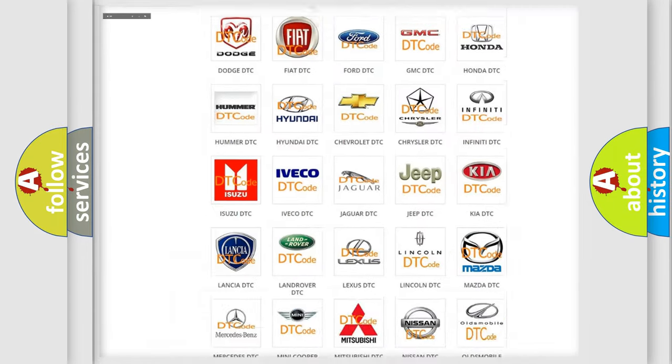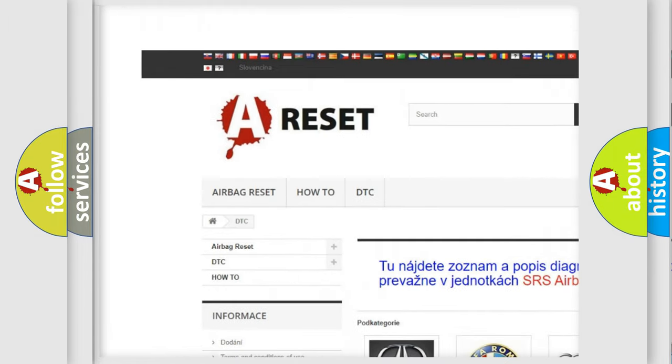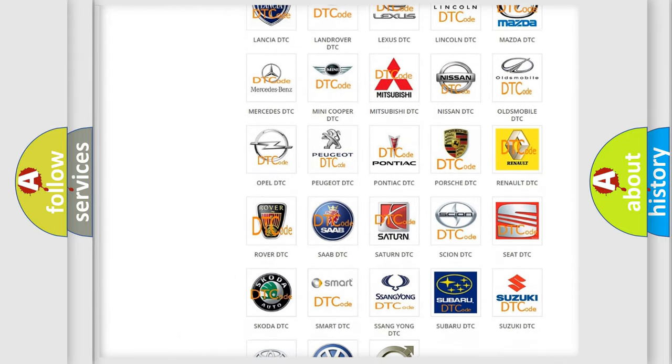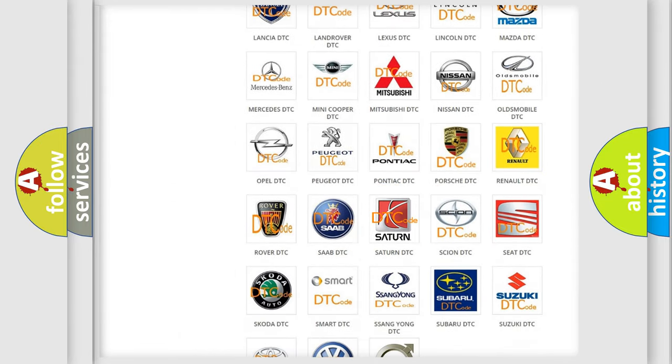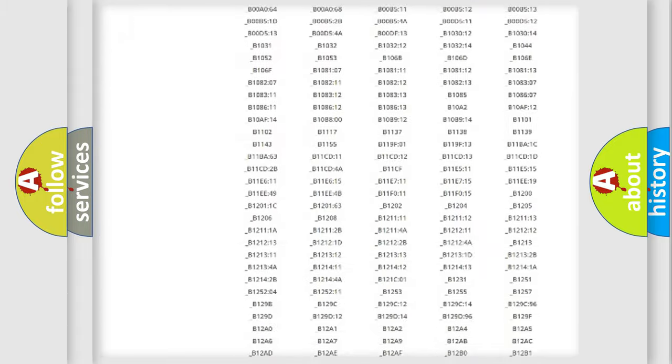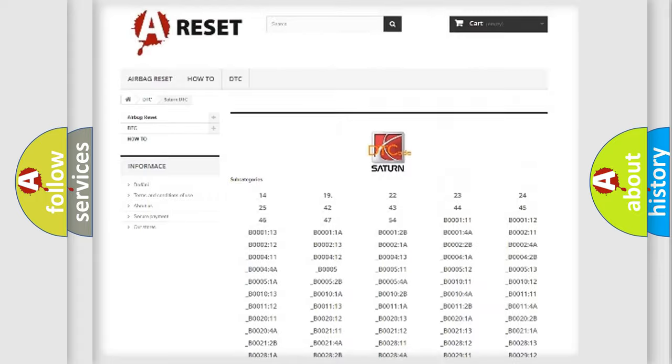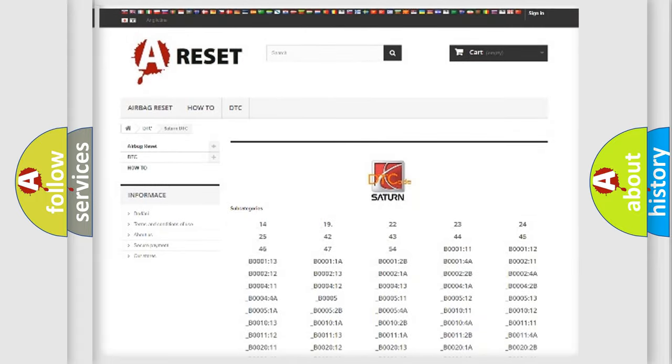Our website airbagreset.sk produces useful videos for you. You do not have to go through the OBD2 protocol anymore to know how to troubleshoot any car breakdown. You will find all the diagnostic codes that can be diagnosed in Saturn vehicles, and also many other useful things.